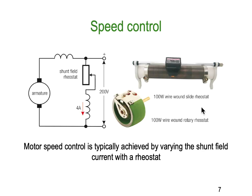Speed control: the best way to do speed control is by controlling the current through the field. We could control the current through the armature, but the armature current is normally very very high — as we saw, up in the order of 800 amps — whereas the field only takes about 4 amps. So we tend to put the speed control in the field circuit.